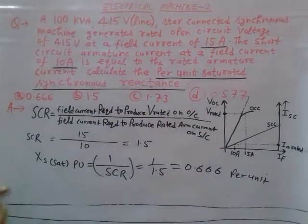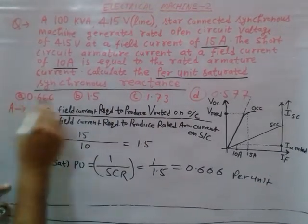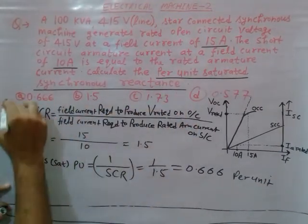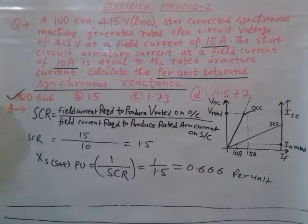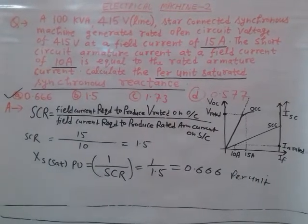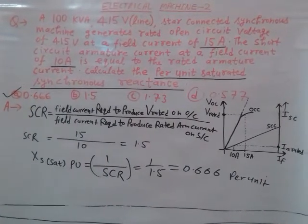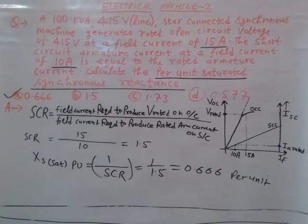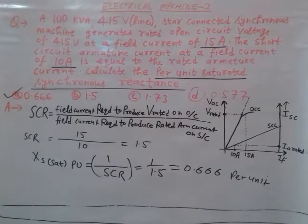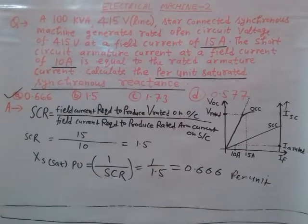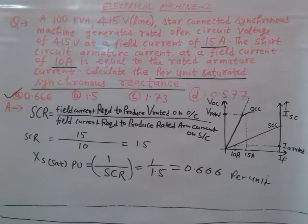So option A is correct. The value 0.666 is the per unit saturated synchronous reactance.